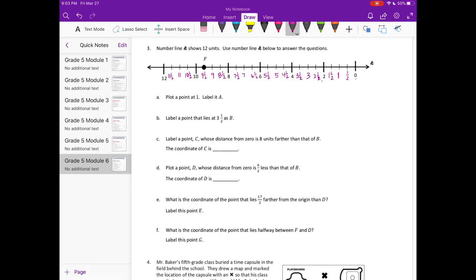and 11 and 1 half. So plot a point at 1, label it A. So there's 1. Let's label that A.